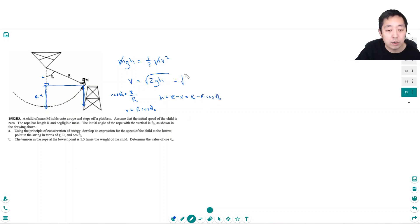And so v is equal to the square root of 2g. I can factor out an r, 1 minus cosine theta not. Okay, so that's A.